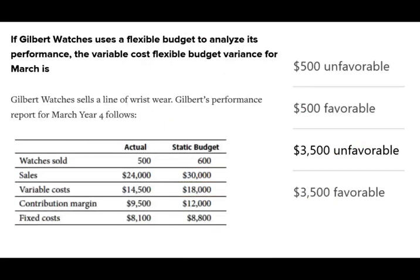Let's take a look at the second question. It's similar in that it asks whether something is favorable or unfavorable and gives you the same number — they make it easy to figure out the amount, but you must determine if it's favorable or unfavorable. The question is: if Gilbert Watches uses a flexible budget to analyze its performance, what is the variable cost flexible budget variance for March? They give us the static budget and the actual budget.